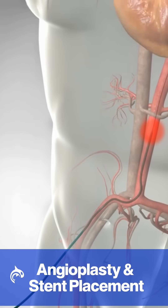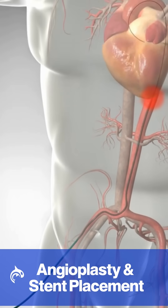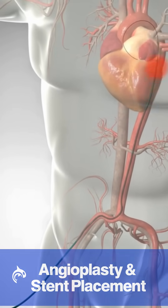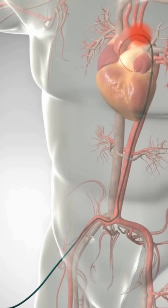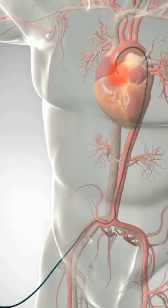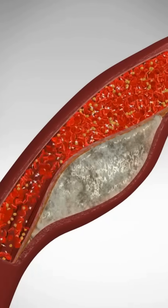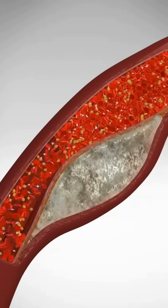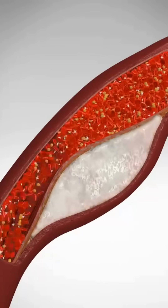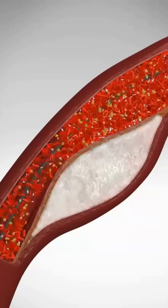An angioplasty and stent placement opens blocked arteries. The procedure requires a cardiac catheterization. Now we're inside a heart artery. Here's the plaque that's blocking the flow of blood.